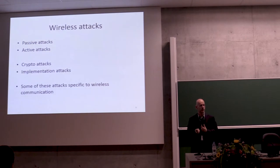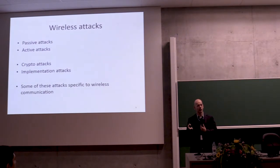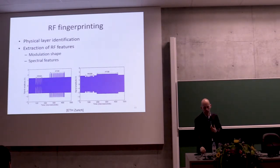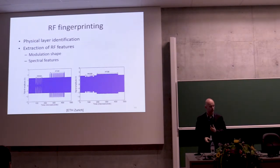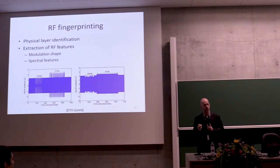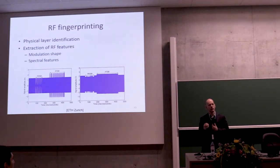This brings us to wireless attacks. In security there are passive attacks, active attacks, crypto attacks, implementation attacks, and so on, but some are very specific to wireless. One very specific passive attack is called RF fingerprinting. Researchers discovered that if you look at the physical layer — the actual waveforms a device is sending — these are very specific to one particular device.